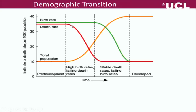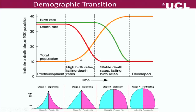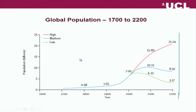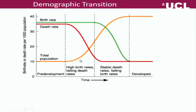But as the death rate starts to fall, the population grows, and eventually that leads people to decide they want to have smaller families. Then you get a fall in the birth rate, and eventually you end up with a situation of low birth rates and low death rates, but the population is much bigger.